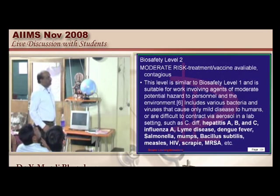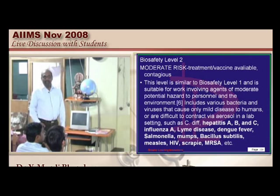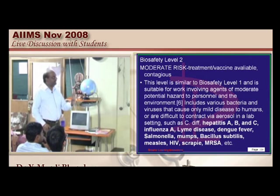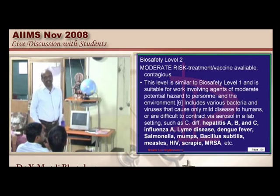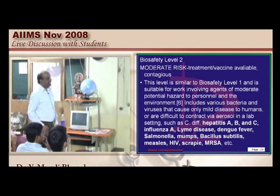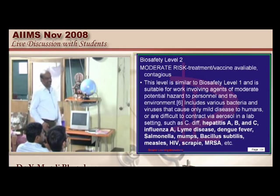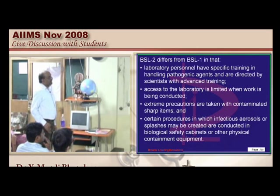Biosafety level 2 means moderate risk, but if infected, treatment and vaccines are available — it is still a contagious condition. Examples include hepatitis A, B, C, influenza A, Lyme disease, dengue fever, salmonella, mumps. Even MRSA falls in biosafety level 2.